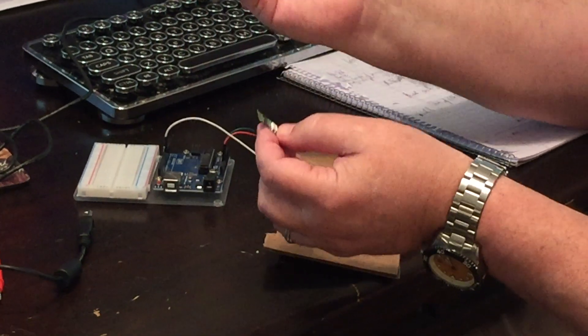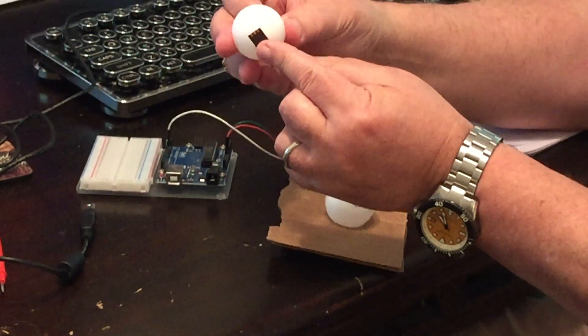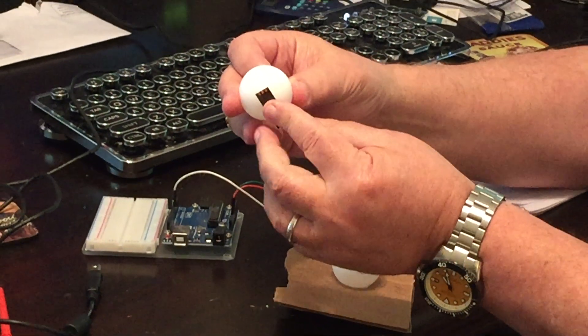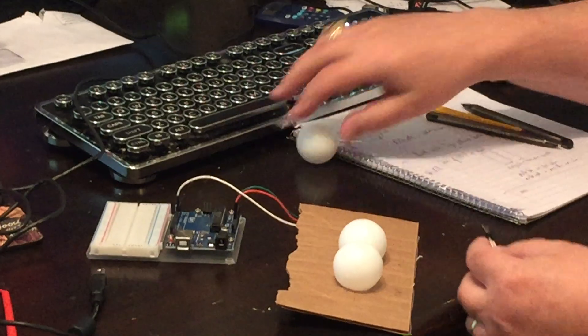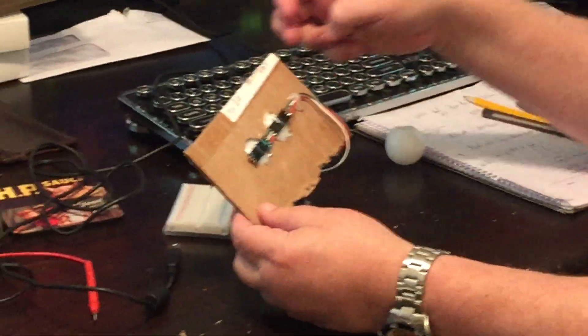And then the other one, the easier one would be to just hot glue the Neopixel to the outside of the ball, which would make everyone's lives a lot simpler. But I thought I'd give it a whirl just to see which one was best.